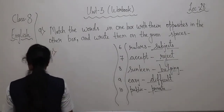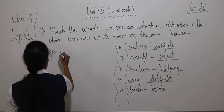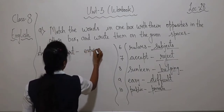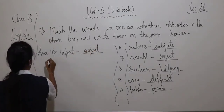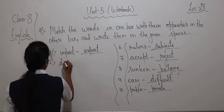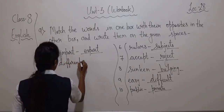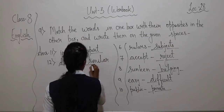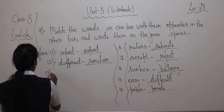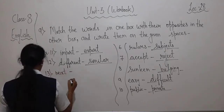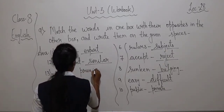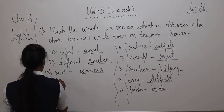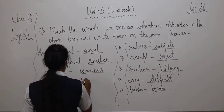Number 11 — import — export. Different — similar. Next — previous. Peace — war.